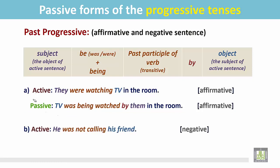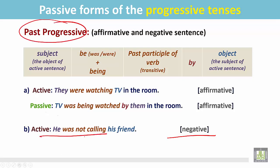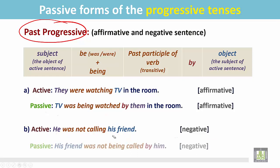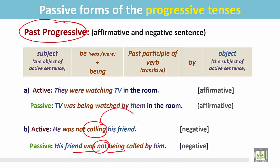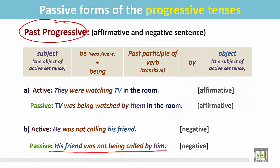Another example. 'He was not calling his friend.' This is a negative sentence in the past progressive tense. He was not calling whom — his friend. This is the object of the verb. In the passive sentence, the object becomes the subject: 'his friend'. This is a singular noun, so use 'was'. To make it negative, add 'not'. Then 'being', then the transitive verb becomes the past participle form 'called', then preposition 'by', and the subject of the active sentence becomes the object. The passive form is: 'His friend was not being called by him.' This is still a negative sentence as a statement.